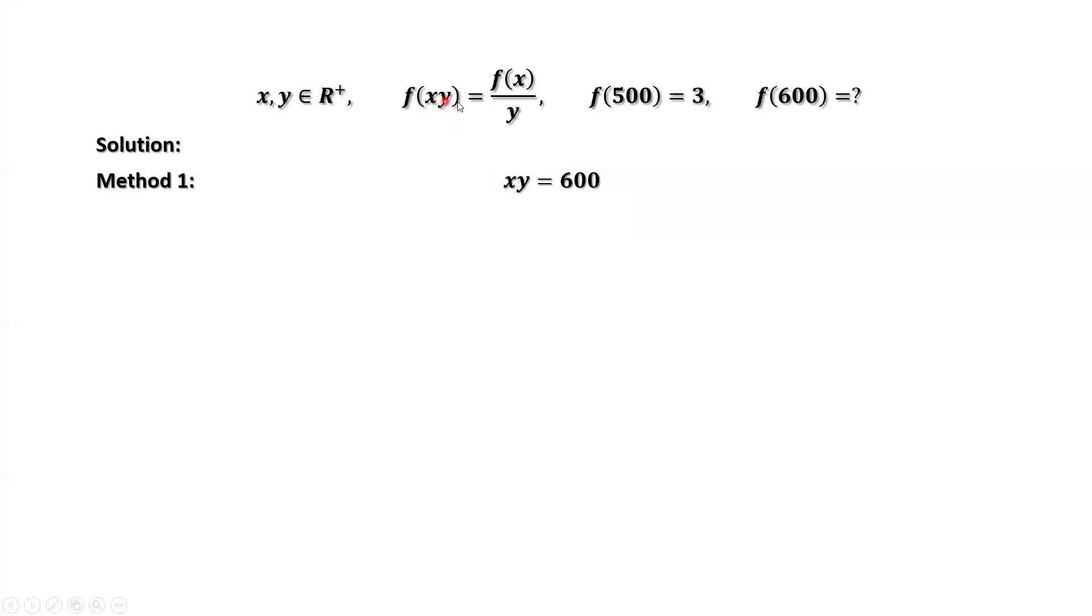f of xy equals f of x over y. Here we can assume xy equals 600 because we want to find f of 600. Plug in here and what is this value? This value x must be 500 because this is given. If x equals 500, what is this number?